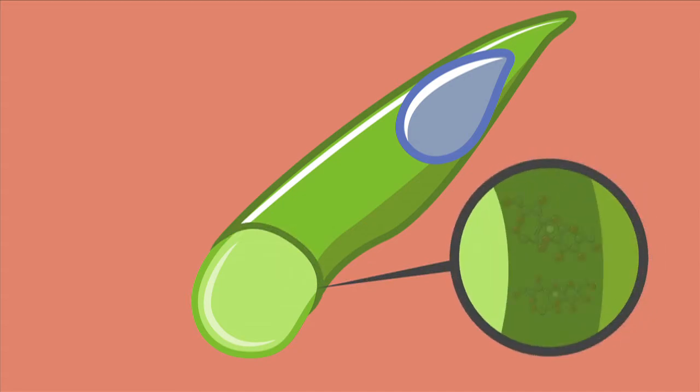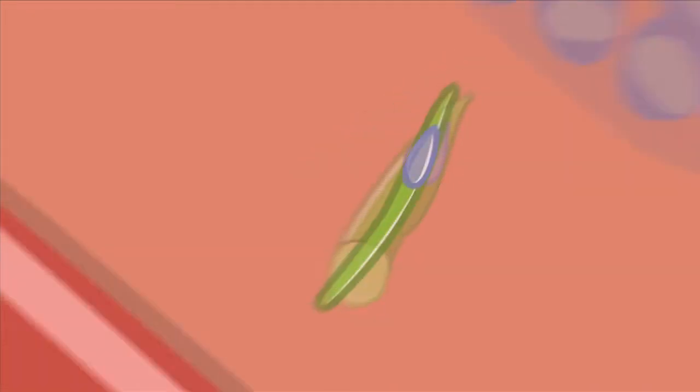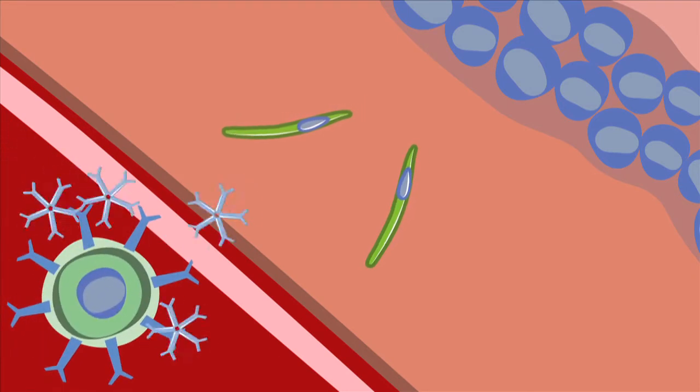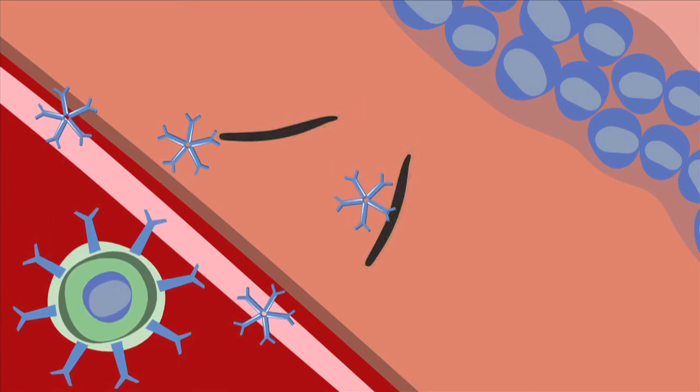When this occurs in the skin, immediately after the injection of the sporozoites, the antibodies trigger the activation of complement and kill those sporozoites.